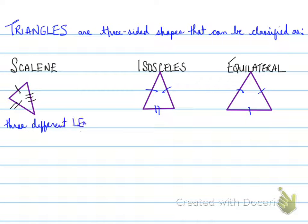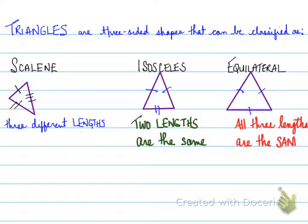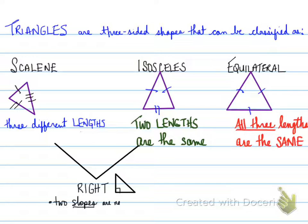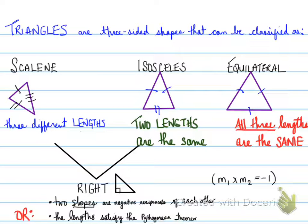By knowing this, what we can do is use length to determine, classify the type of triangle. Now, scalene and isosceles can be classified further. It can be classified as a right triangle. You can classify right triangles by looking at their slopes, where two slopes are negative reciprocals of each other. Basically, slope 1 times slope 2 is equal to negative 1, or the length satisfied the Pythagorean theorem.